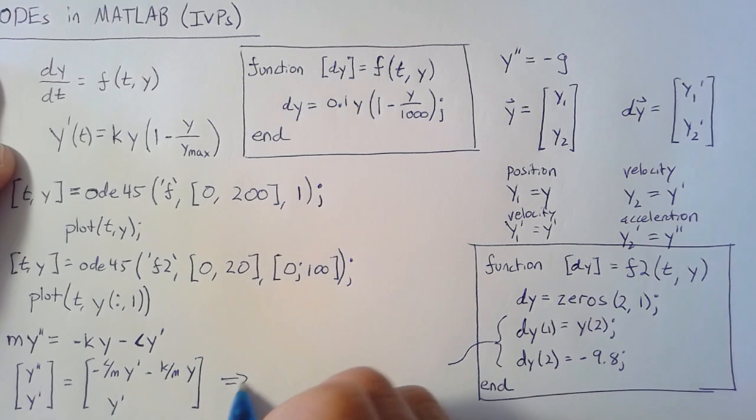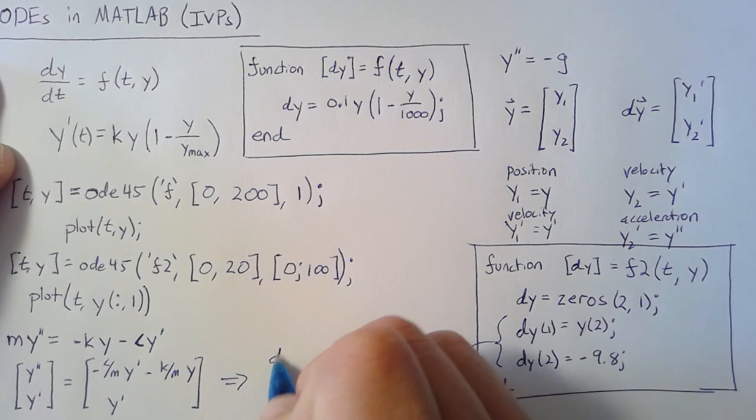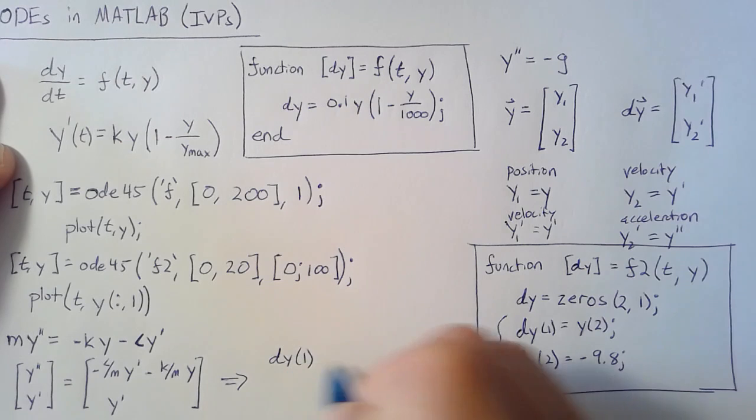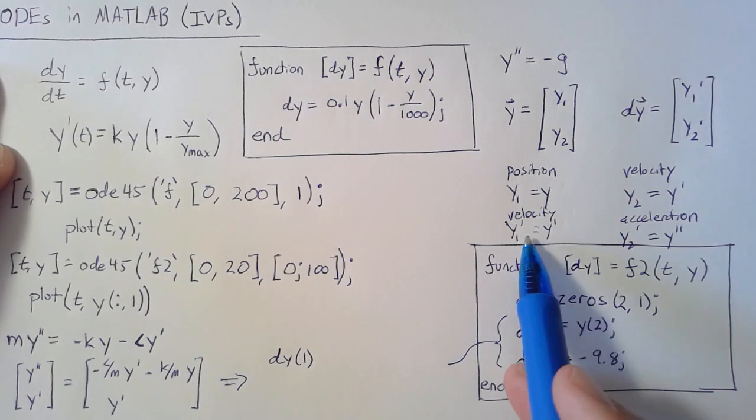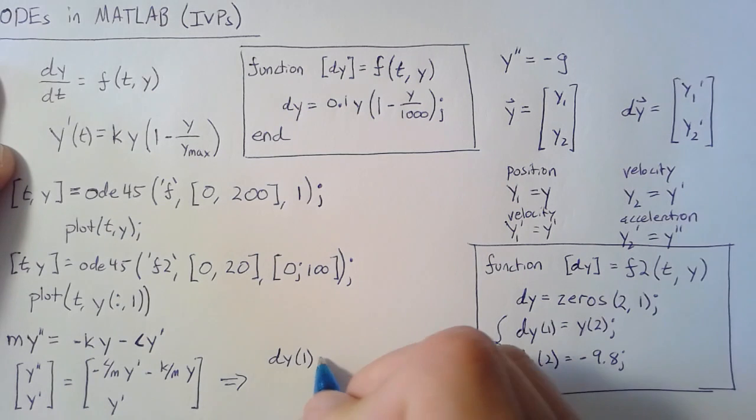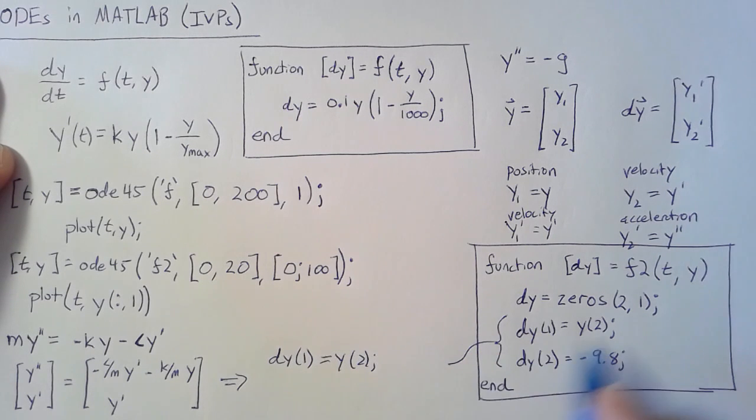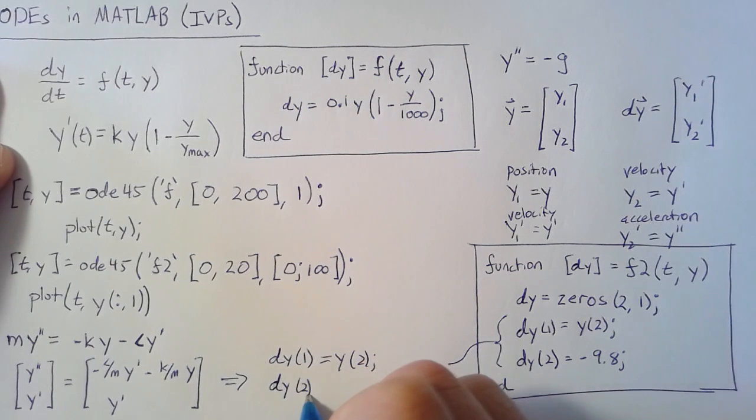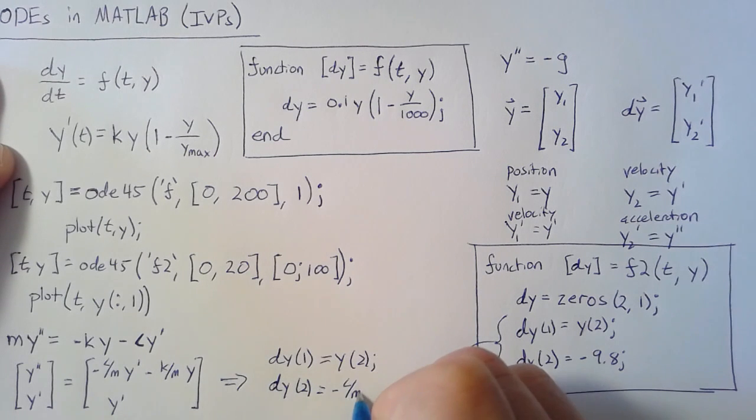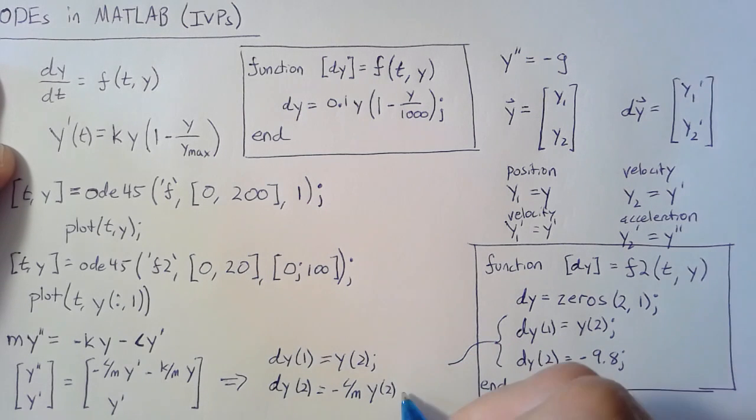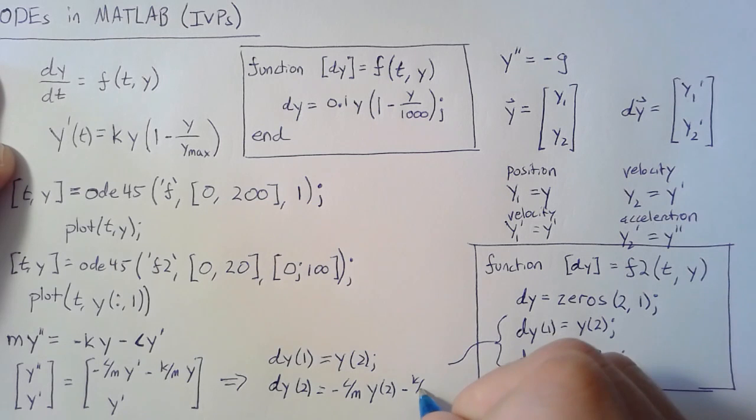So how do we do that? Well, dy(1) doesn't change - it's the velocity, which equals y(2), so we can copy that straight over. What does change is our acceleration. dy(2) is our acceleration, and that's going to be equal to negative c over m of y(2), because this is our velocity, minus k over m of y(1).